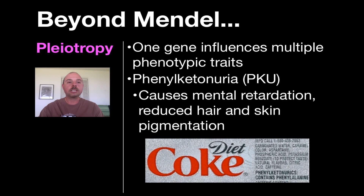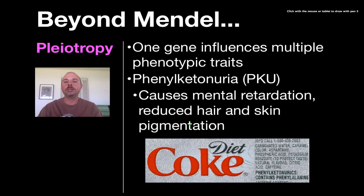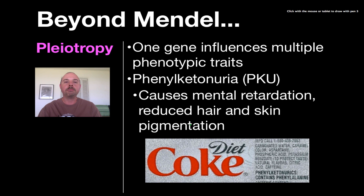The next concept is pleiotropy and pleiotropic genes — where a single gene influences multiple phenotypic traits. One gene actually controls many different things that show up in an individual organism. What makes this particularly interesting and dangerous is that a mutation on a pleiotropic gene can result in many different mutations spread across the individual, manifesting in a lot of different ways.